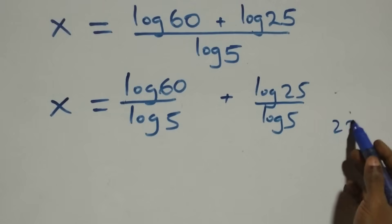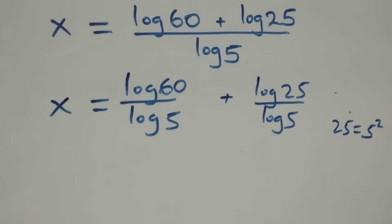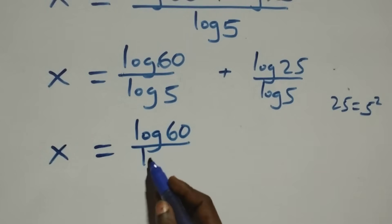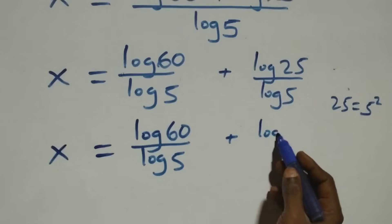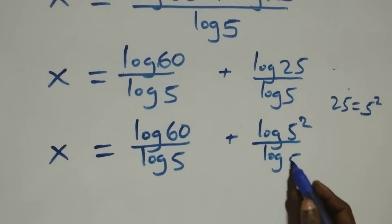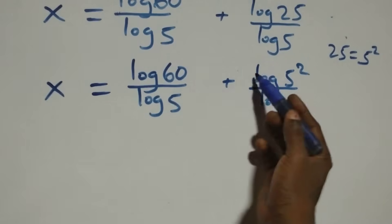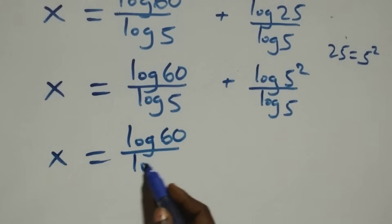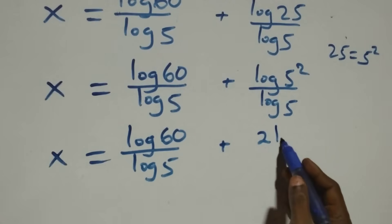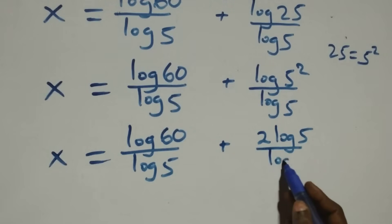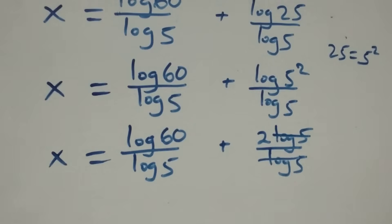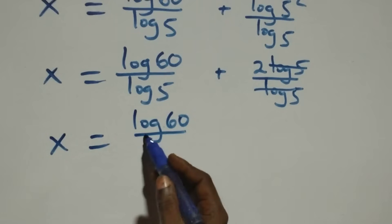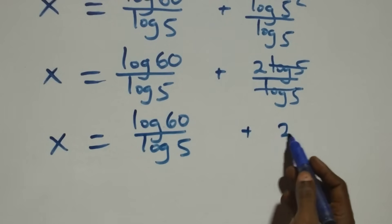We can write 25 as 5 times 5, which is 5 squared. So we have x equals log 60 over log 5, plus log 5 squared over log 5. Applying the power rule, two comes down: x equals log 60 over log 5, plus 2 log 5 over log 5. Log 5 cancels, leaving 2, so x equals log 60 over log 5 plus 2.